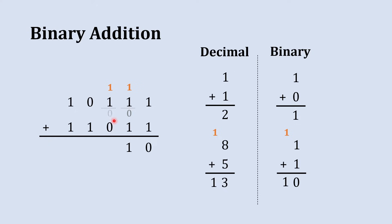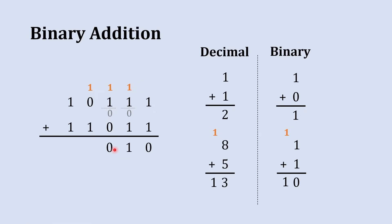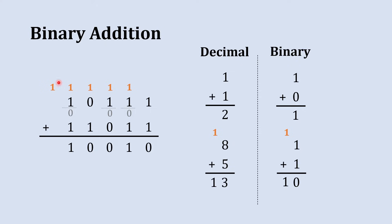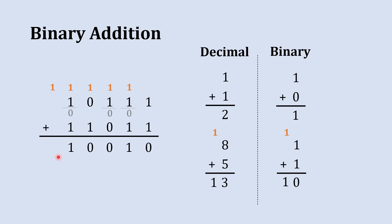Continuing: 0 plus 0 is 0. Next column: 1 plus 0 is 1. Then 1 plus 1 gives sum 0 and carry 1. Again, 1 plus 1 gives sum 0 and carry 1. Then 0 plus 1 gives 1. Finally, we have a carry of 1 but no digits left in the numbers, so by default we take it as 1: 1 plus 0 plus 0 gives 1.